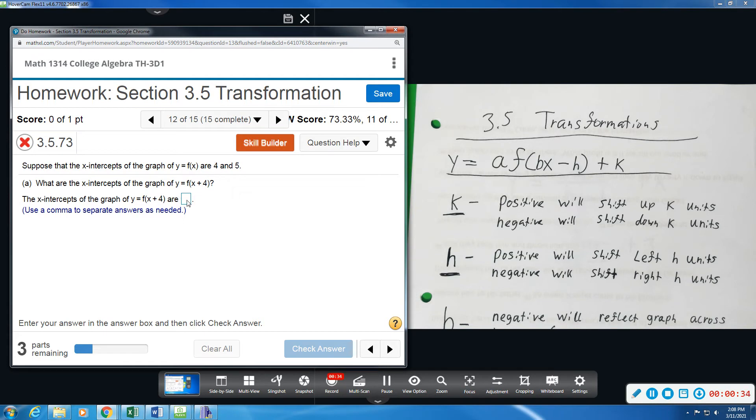So if I did that, took away 4 from 4, that would leave us with 0. And my other intercept, if I took away 4 from the 5, that would leave me with a positive 1. So we just take those and shift them to the left 4 units.